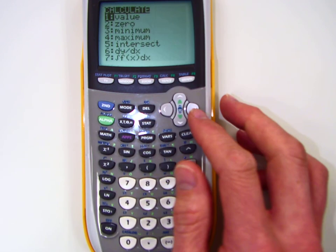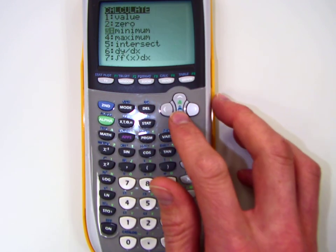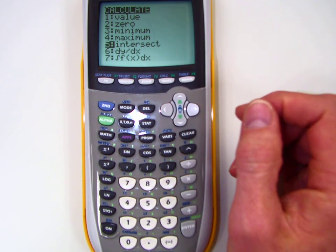If I do second trace, I got maximum, I can do that too. If I put another equation, I can find out where the two graphs cross.